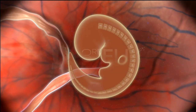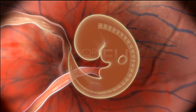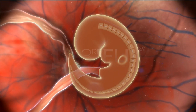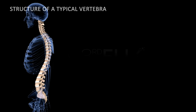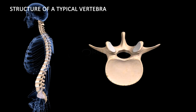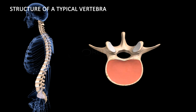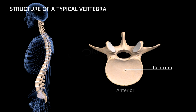In the human embryo, there are 33 vertebrae, some of which fuse during the process of development. A typical vertebra is a ring-shaped bone. It has a large disc-like flattened body called the centrum on the ventral or anterior side, and a neural arch on the dorsal or posterior side.